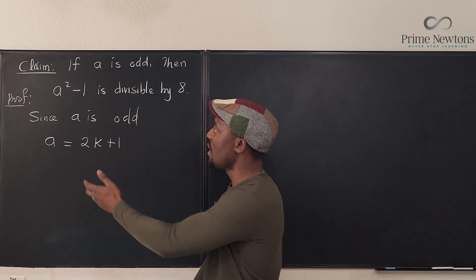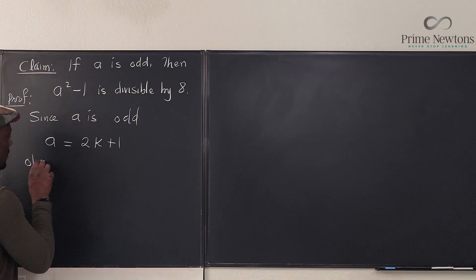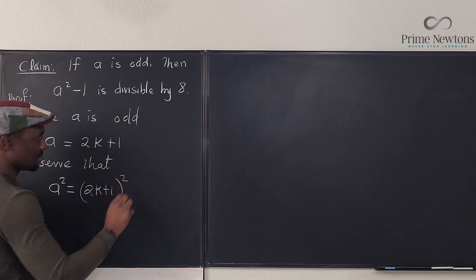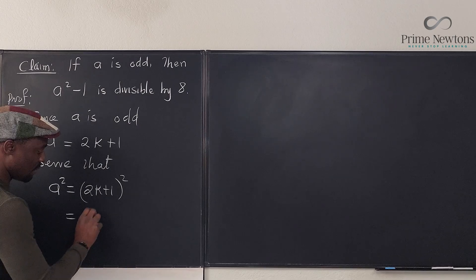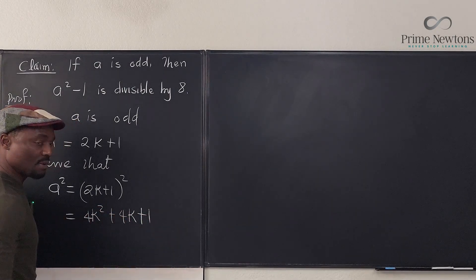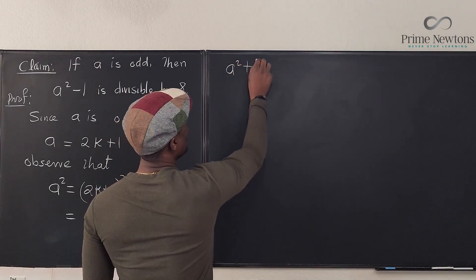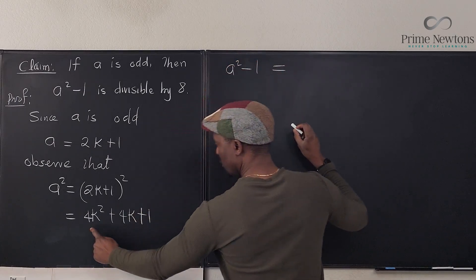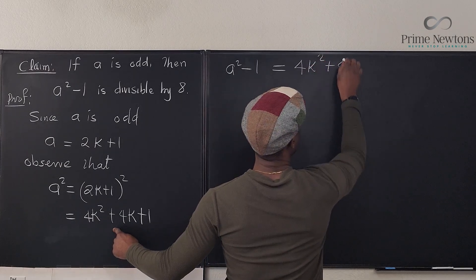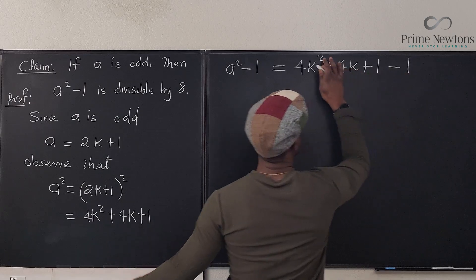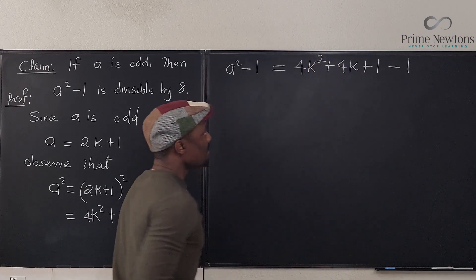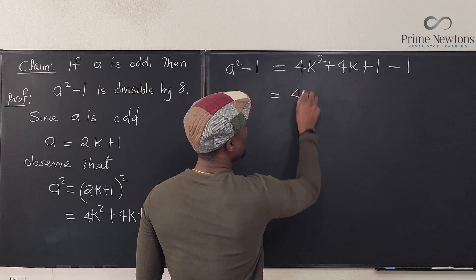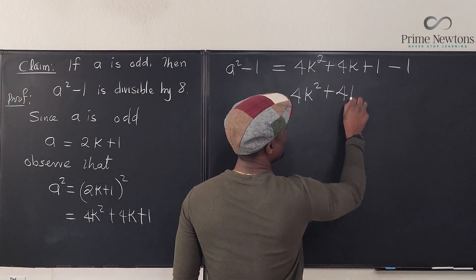So now that we have a representation for it, what will a squared be? Observe that a squared will be equal to (2k+1) squared. And what would that be? If we square this out, it's going to be 4k² + 4k + 1. So that means that a² - 1, that's where we're going, a² - 1 will be equal to 4k² + 4k + 1 - 1. We're going to get 4k² + 4k and we're done.